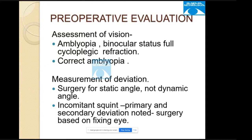In preoperative evaluation, we assess vision using age-appropriate tests to detect amblyopia, assess binocular status, perform full cycloplegic refraction, and correcting amblyopia is mandatory. We measure the deviation using the prism-bar cover test. Surgery is indicated for a static angle, not a dynamic angle. In incomitant squint, primary and secondary deviations are noted and surgery is based on the fixing eye.